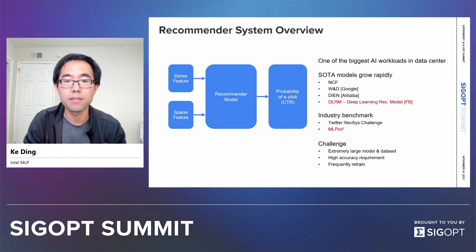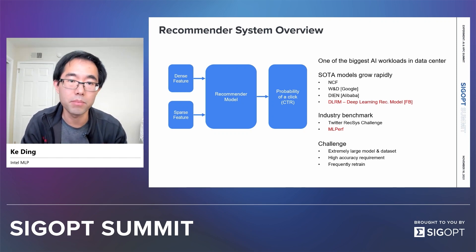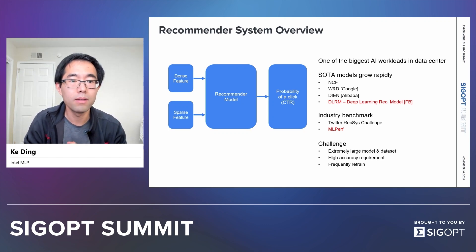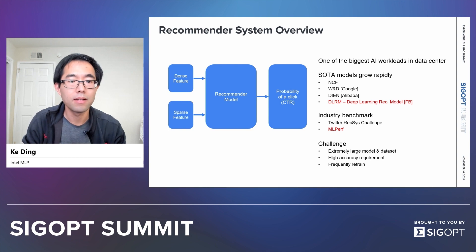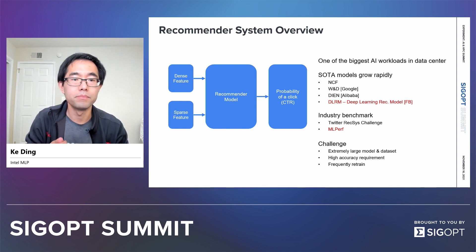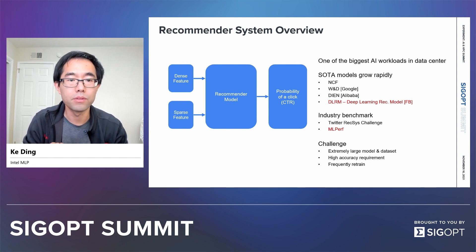A typical recommendation system takes two types of data as input. One is so-called numerical dense features. Examples like age, like number of purchases per month, like active minutes per day when you are on a certain application.